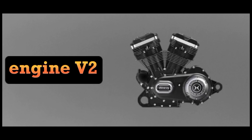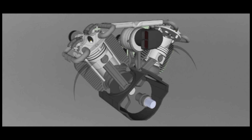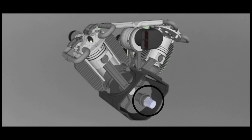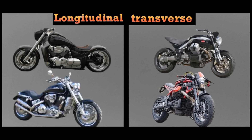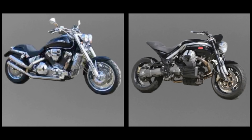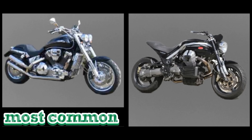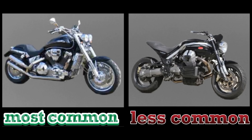Now let's find out how all these engines work. The V2 engine has a two-cylinder piston engine arranged in a V shape where the cylinders share a common crankshaft. Widely used in motorcycles, installed transversely or longitudinally — terms used to refer to the orientation of the crankshaft relative to the frame. Transverse mounting is the most common arrangement and longitudinal arrangement is less common.